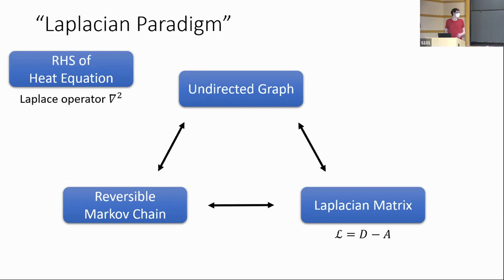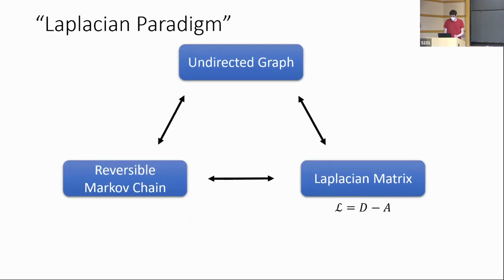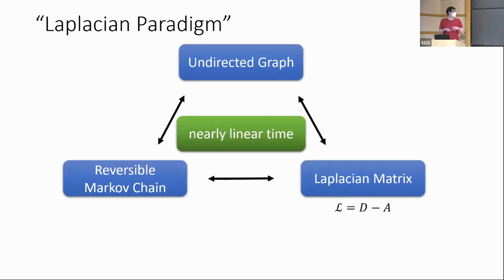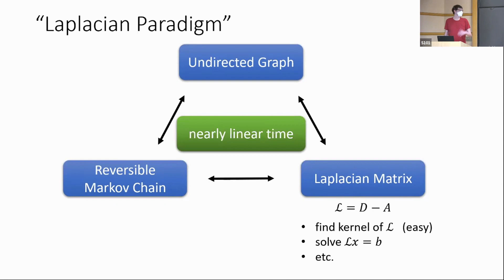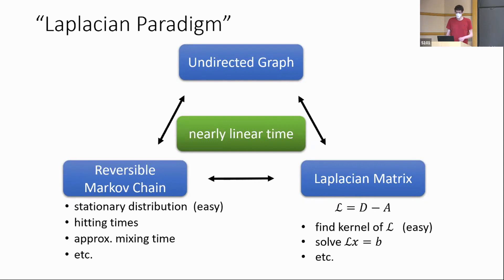Why do you care about these matrices? Because it's a discretization of the heat equation is one reason, but there are other reasons too. Through exploiting connections between these three different perspectives, people have been able to find nearly linear time algorithms. For example, in the linear algebraic setting, you can find the kernel of L — it's just the all-ones vector. More difficultly, you can solve a Laplacian linear system.